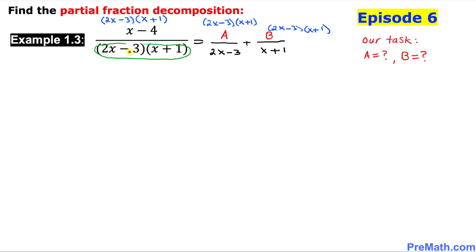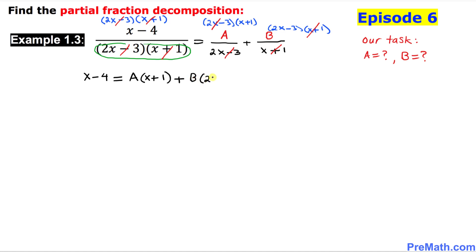Now let's simplify. The (2x minus 3) cancels with (2x minus 3), and (x plus 1) cancels with (x plus 1). So on the left hand side we simply end up with x minus 4. On the right hand side, (2x minus 3) cancels on the first term giving us A times (x plus 1), and (x plus 1) cancels on the second term giving us B times (2x minus 3). We'll call this equation number 1.